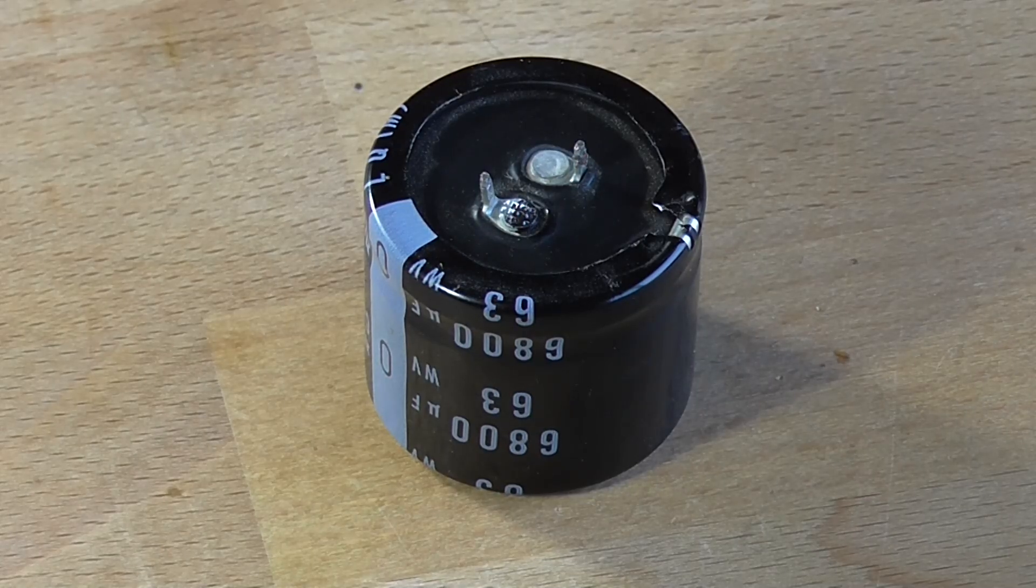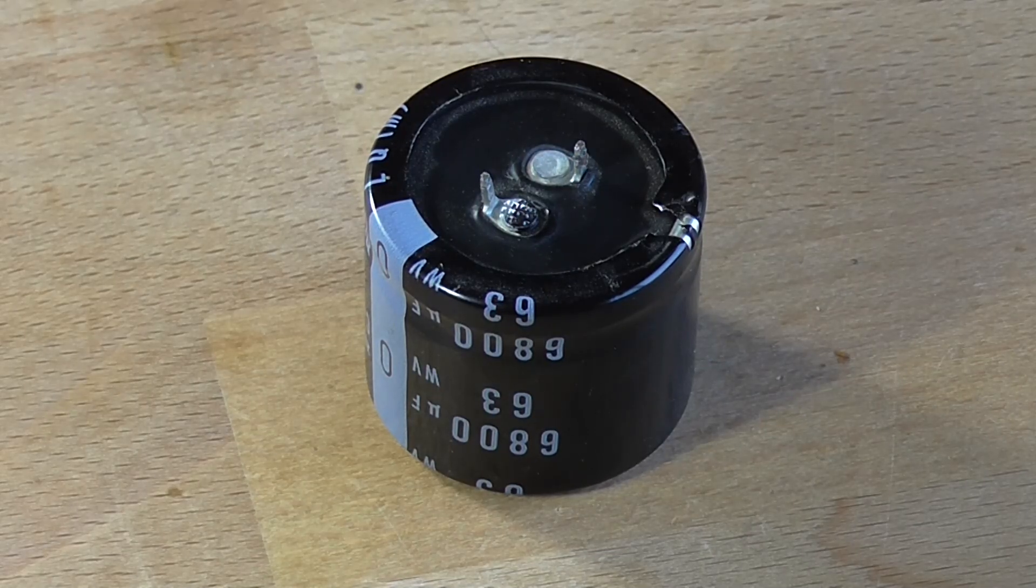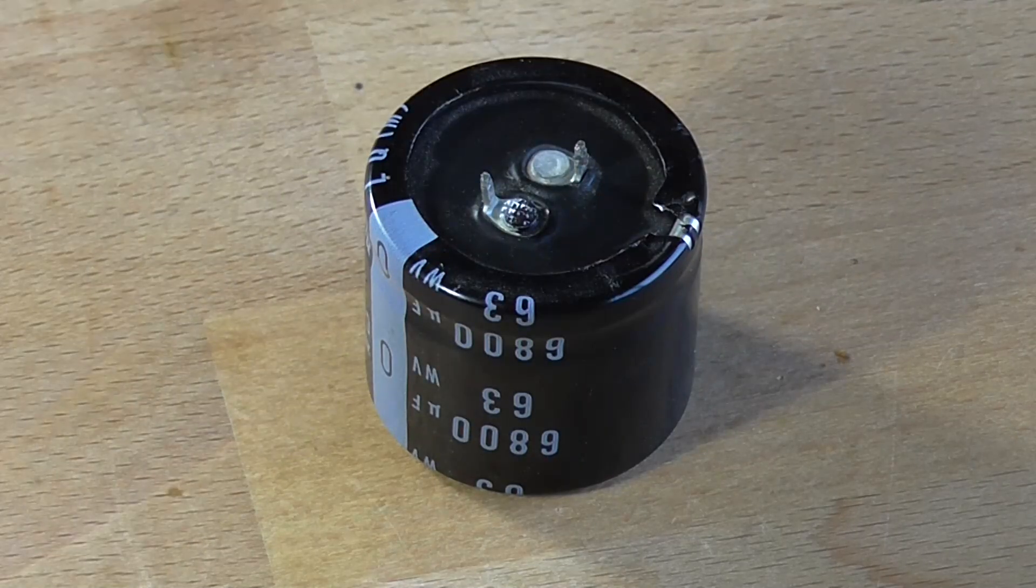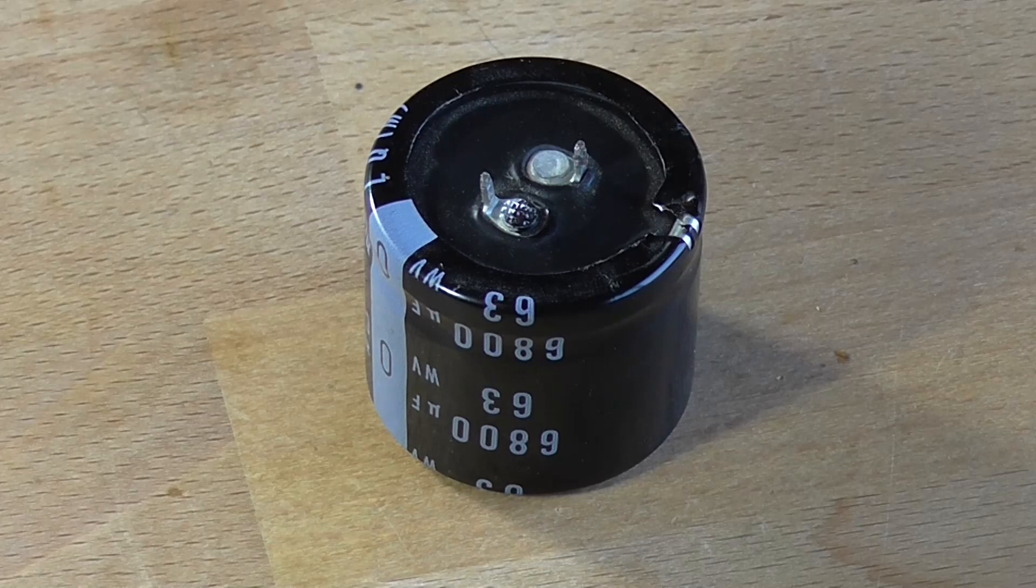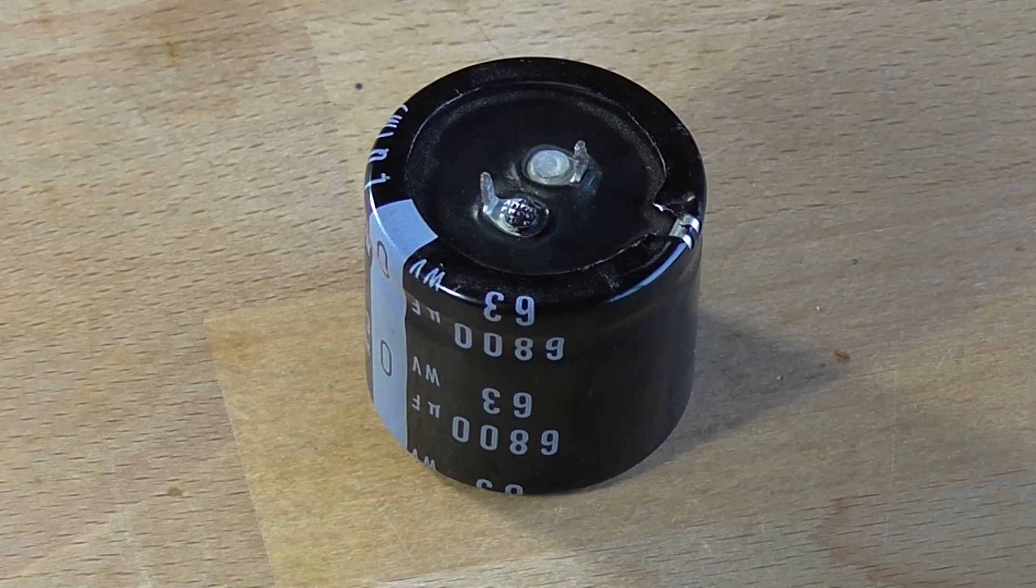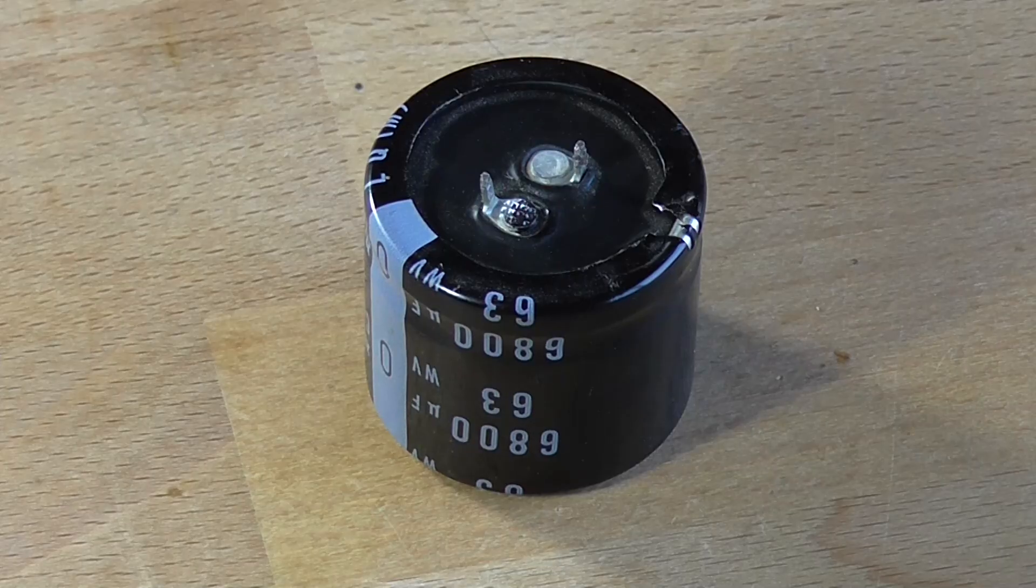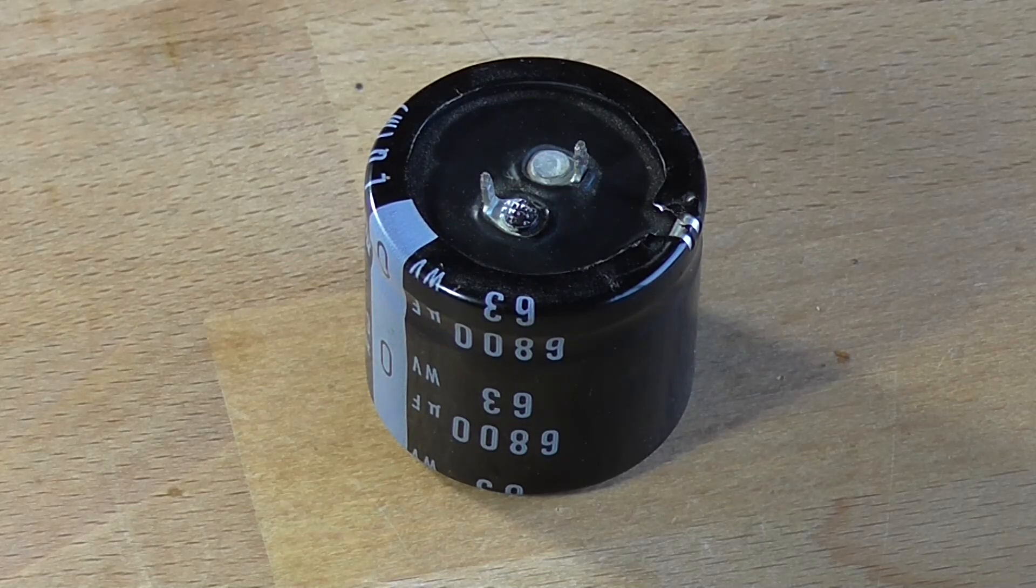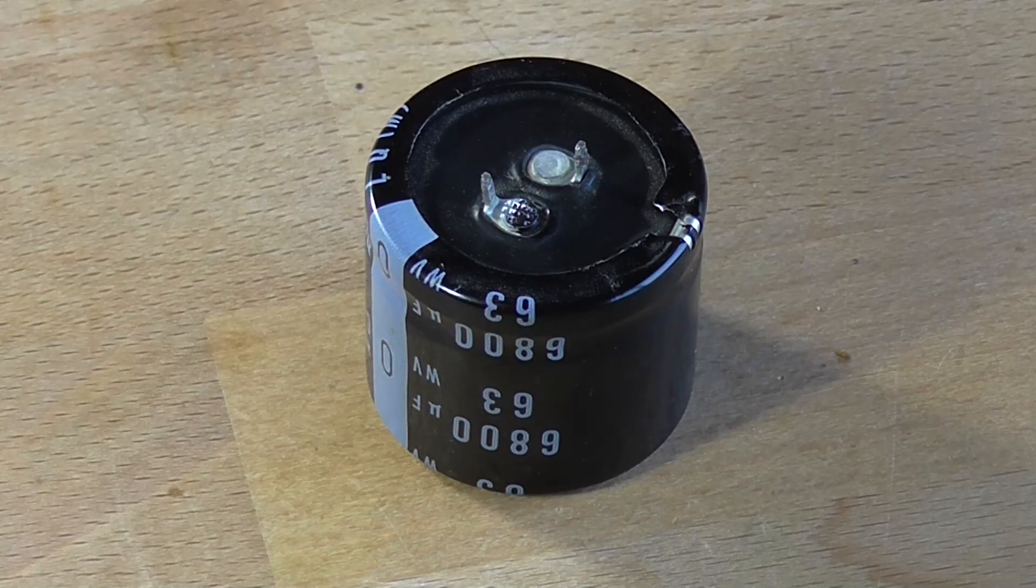So what reforming is, is applying a DC voltage which is current limited to the capacitor to try and repair that aluminum oxide layer, because that aluminum oxide layer can start to form little tiny cracks which can lead to short circuits within the capacitor. And if you would apply the full working voltage or thereabouts to the capacitor without reforming it first, well, bad things can happen like magic smoke starts to happen, the capacitor starts to boil, and the worst case scenario is they go off with a bang.